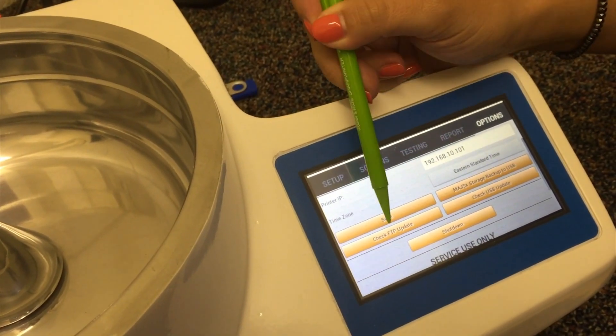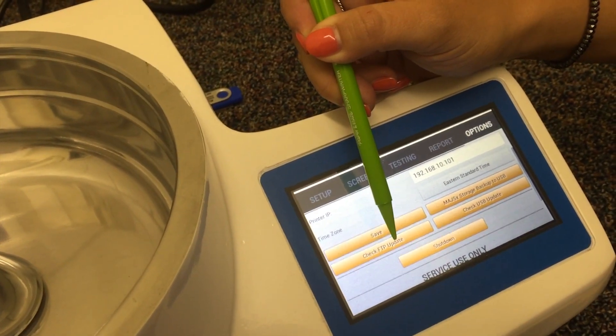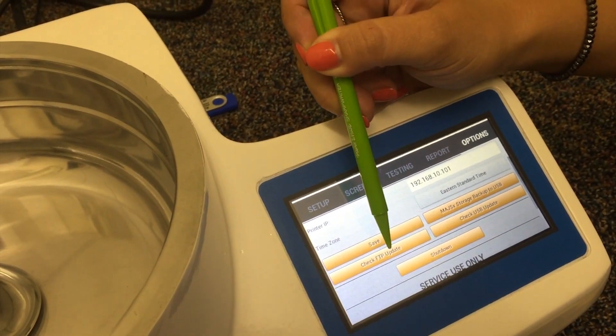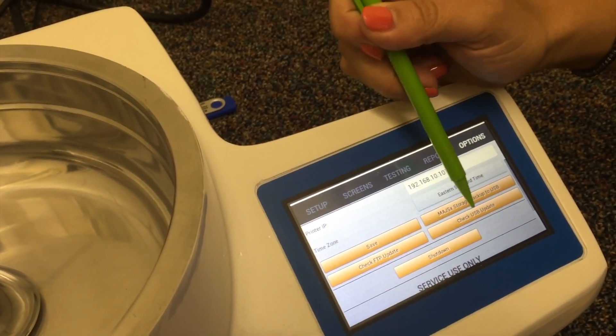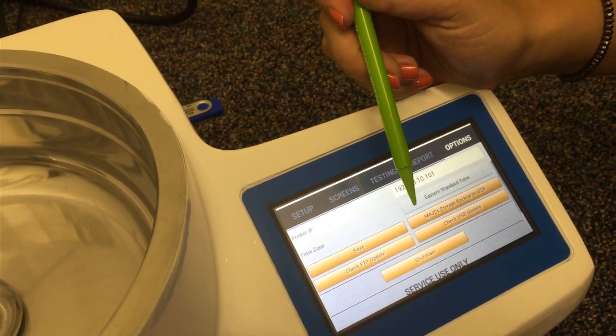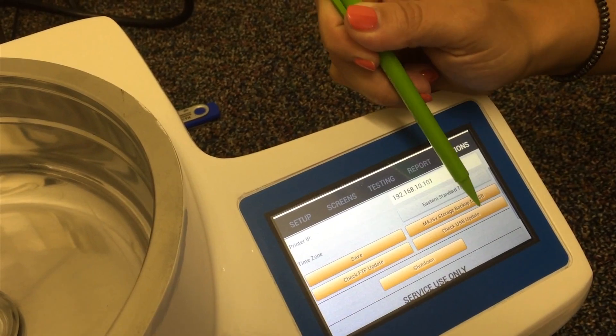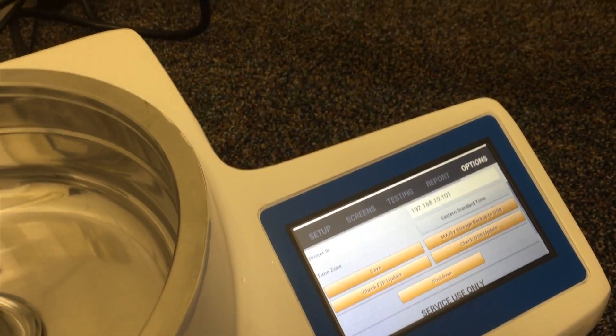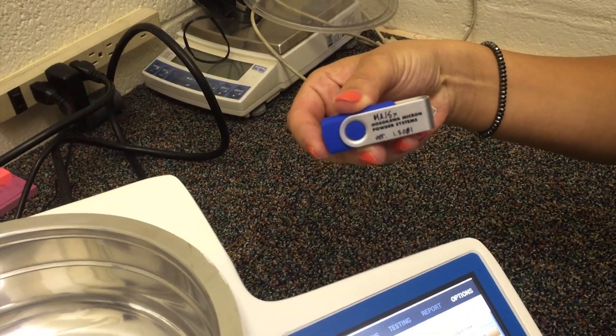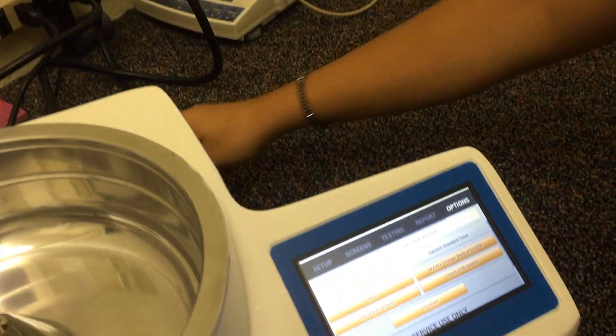Check for FTP updates. You press this button when you are connected to a network that has internet capabilities. Should you be connected to a mini LAN or a router that does not have internet capabilities, you're going to do the check USB update. And should you need the USB with the updated software on it, please contact us at Hoscow Micron Powder Systems and we'd be happy to get that right over to you.